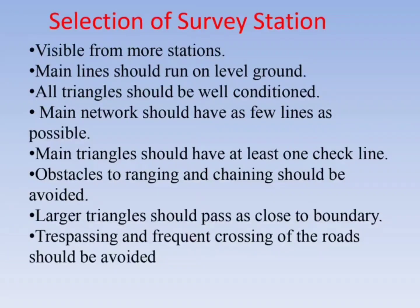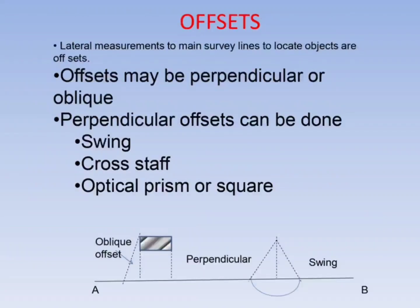Selection of survey station: The survey station should be visible from more stations. Main lines should run on level ground. All triangles should be well-conditioned. The main network should have as few lines as possible. Main triangles should have at least one check line. Obstacles to ranging and chaining should be avoided. Large triangles should pass as close to the boundary as possible. Trespassing and frequent crossings should be avoided.